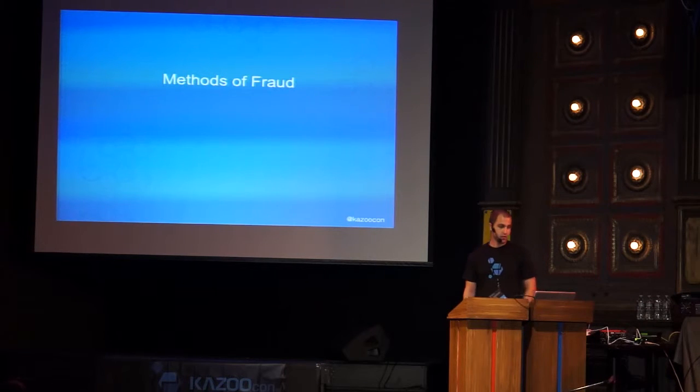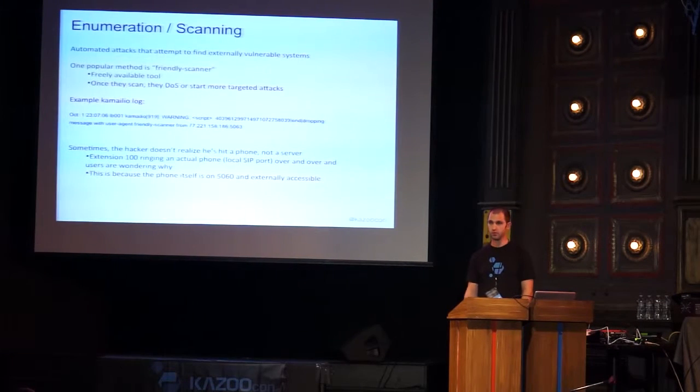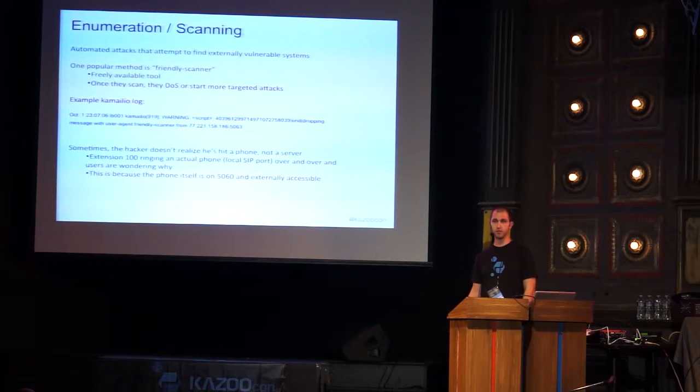Now some slightly more specific methods of attack. The first step is enumeration or scanning — you have to find vulnerable systems to exploit. One popular tool is called Friendly Scanner. We actually have a log line from one of our Camellio servers where someone was attempting to scan with Friendly Scanner and hadn't even bothered to change the user agent, which still says 'Friendly Scanner.' These people often don't need to be very sophisticated. This attempt was easily blocked.